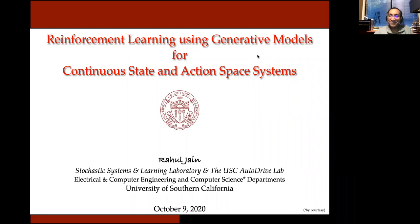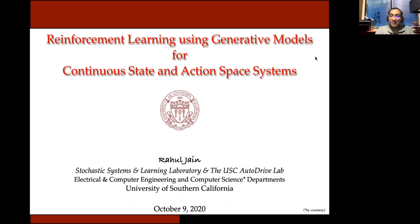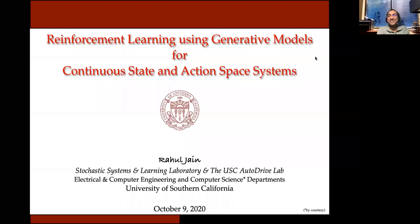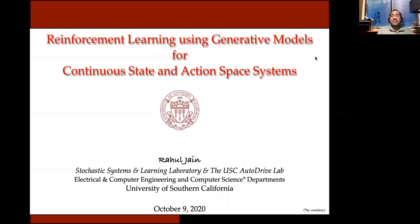We are very pleased to have Rahul Jain present the UTML seminar today. Rahul is the Casey Dahlberg Early Career Chair and Associate Professor at USC, before which he got his PhD from Berkeley. Between Berkeley and USC, he was at IBM for a few years. He's won several awards including the KDR Award, the Young University Award, IBM Faculty Award, and so on. His interests are in reinforcement learning, stochastic control, and statistical learning, and today he's going to be talking about RL using generative models.